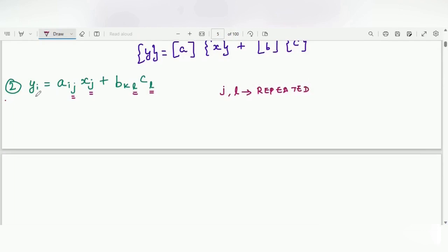Whereas if we observe i, it has been repeated once here, once here. That's it. And this k, it is standing alone. This cannot be accepted as an indicial notation. This is not a way to write the indicial notation. We cannot expand this equation.